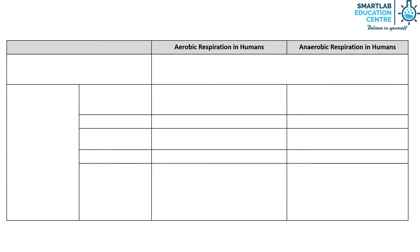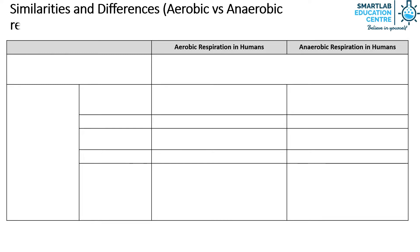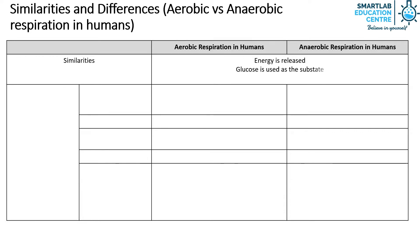Now we will compare the similarities and differences between aerobic and anaerobic respiration in humans. In both processes, energy is released, glucose is used as the substrate, and they are both cellular respiration.